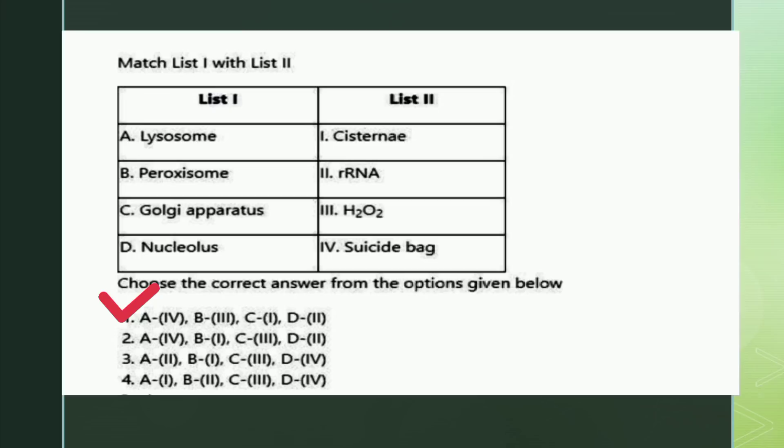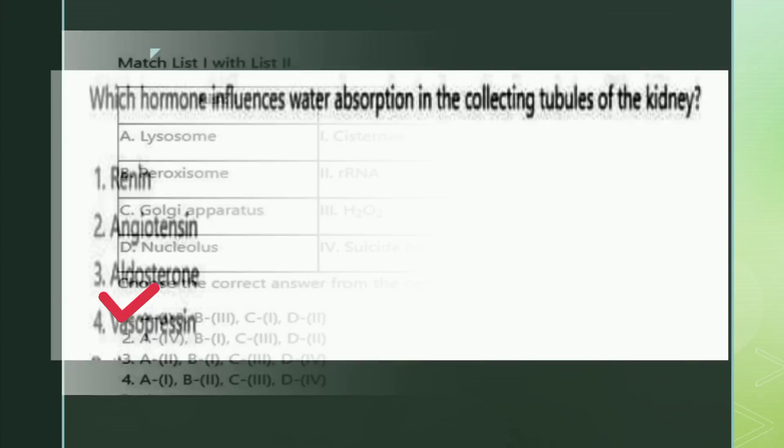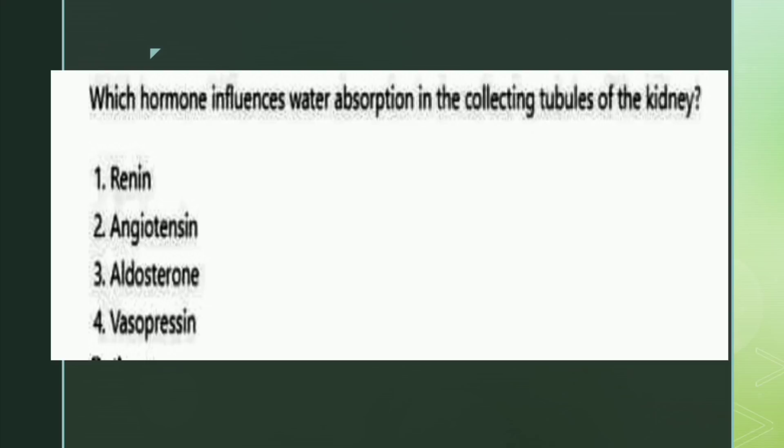The next question: which hormone influences water absorption in the collecting tubules of the kidney? The options are renin, angiotensin, aldosterone, and vasopressin. The right answer is option four: vasopressin.